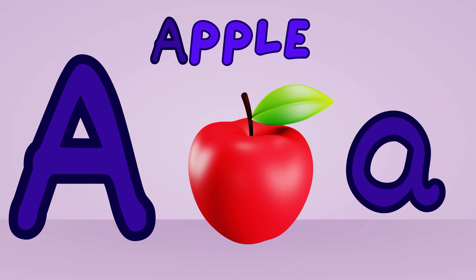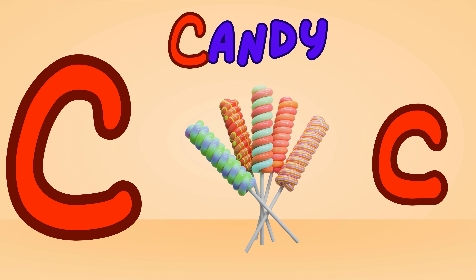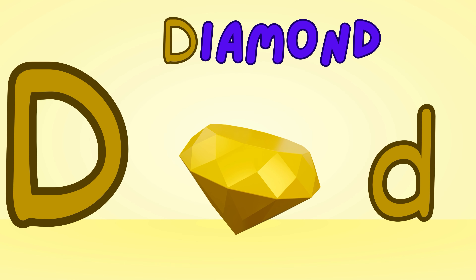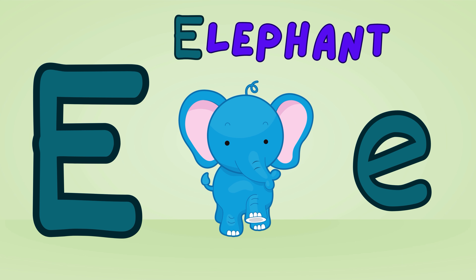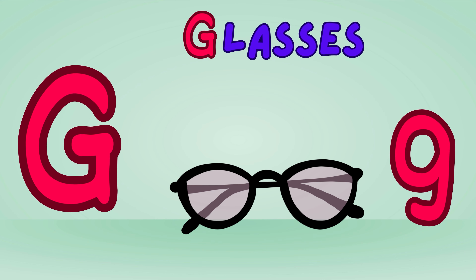A is for apple, apple, apple. This is an apple, apple, apple. B is for baby, baby, baby. This is a baby, baby, baby. C is for candy, candy, candy. This is a candy, candy, candy. D is for diamond, diamond, diamond. This is a diamond, diamond, diamond. E is for elephant, elephant, elephant. This is an elephant, elephant, elephant. F is for fairy, fairy, fairy. This is a fairy, fairy, fairy. G is for glasses, glasses, glasses. This is the glasses, glasses, glasses.